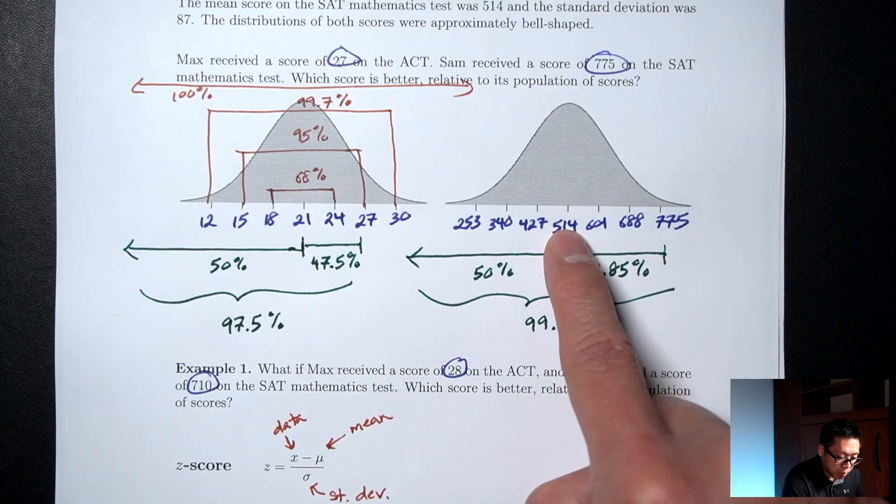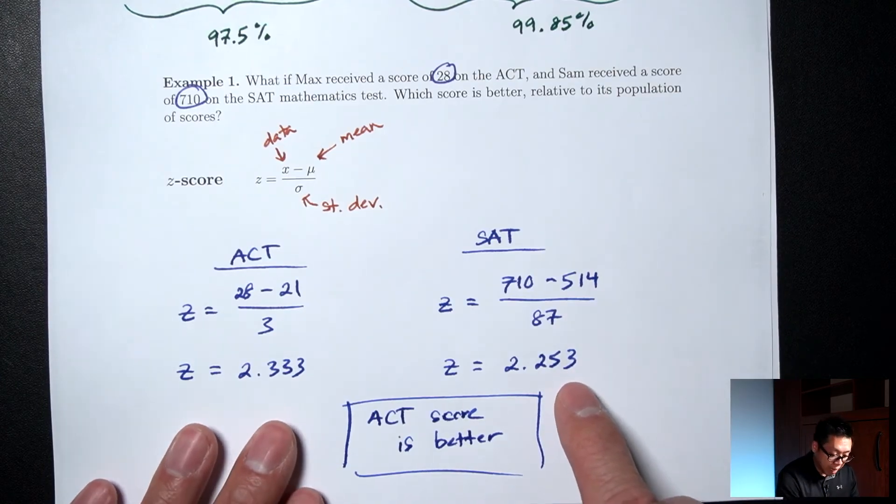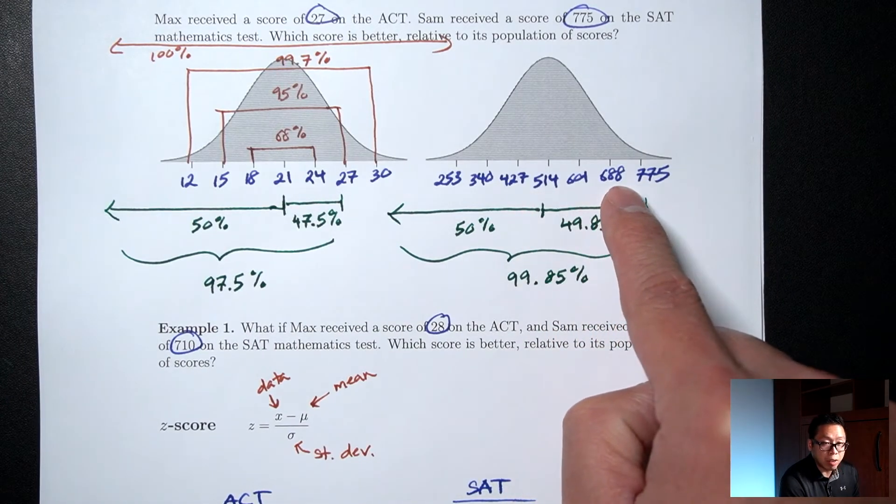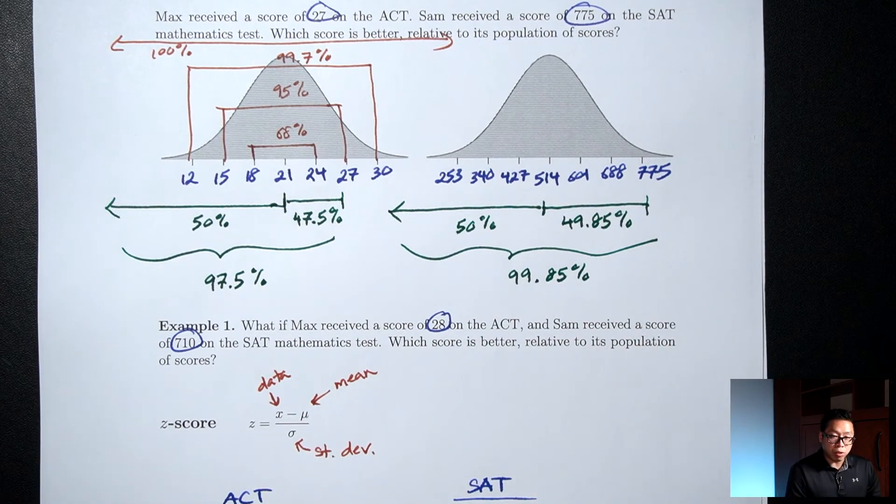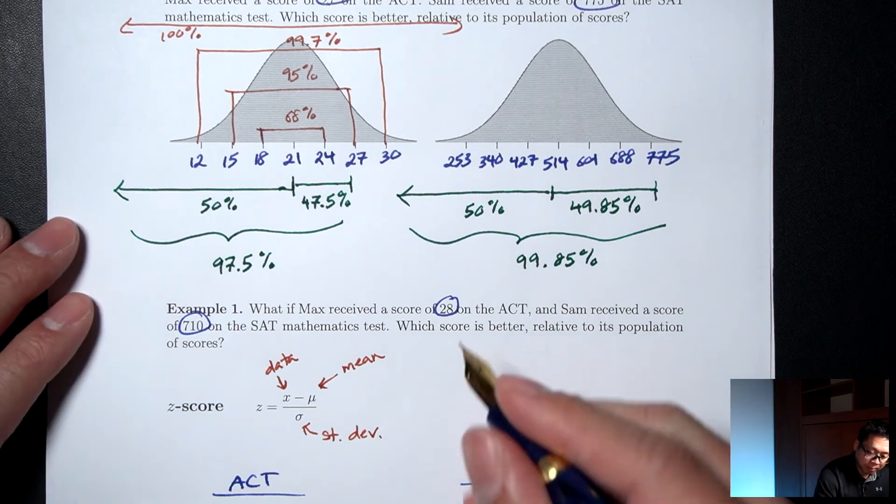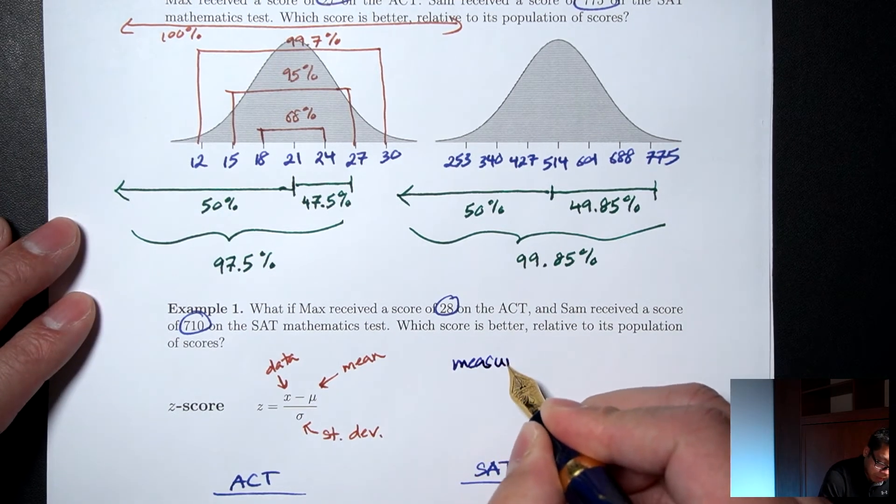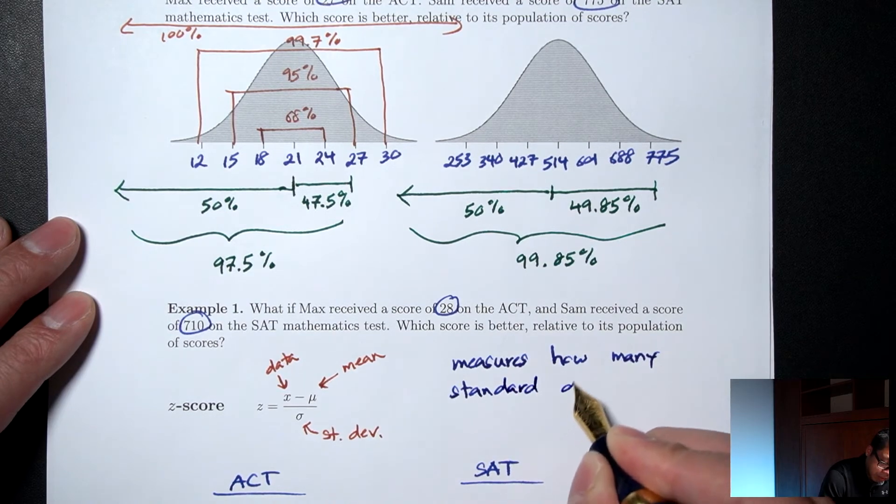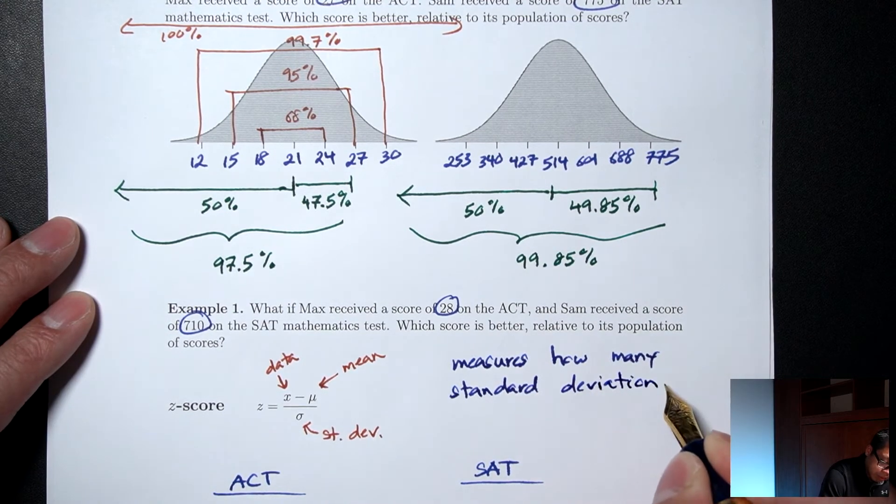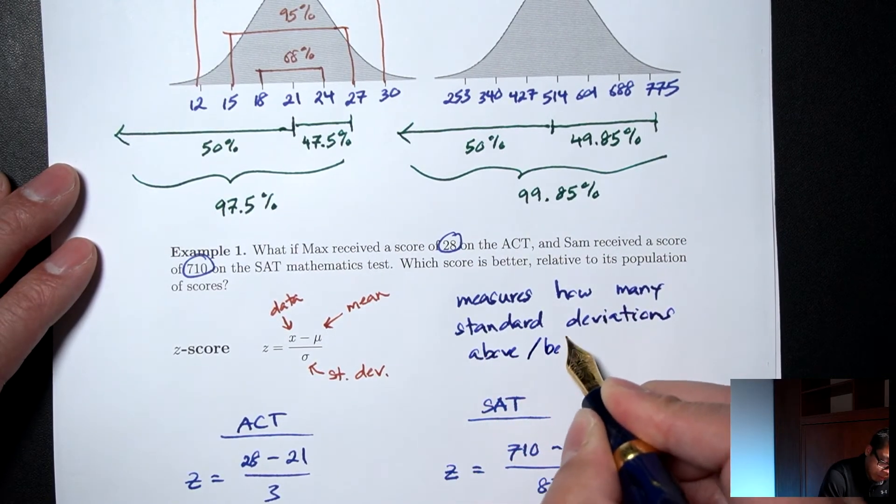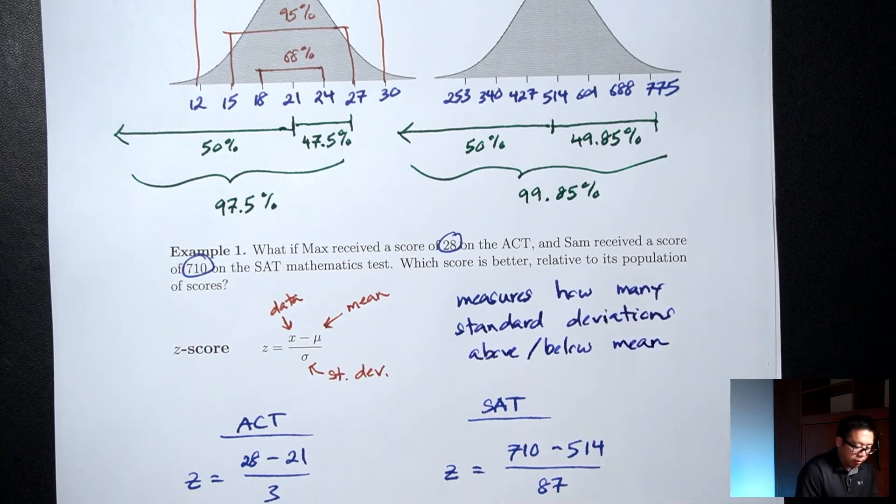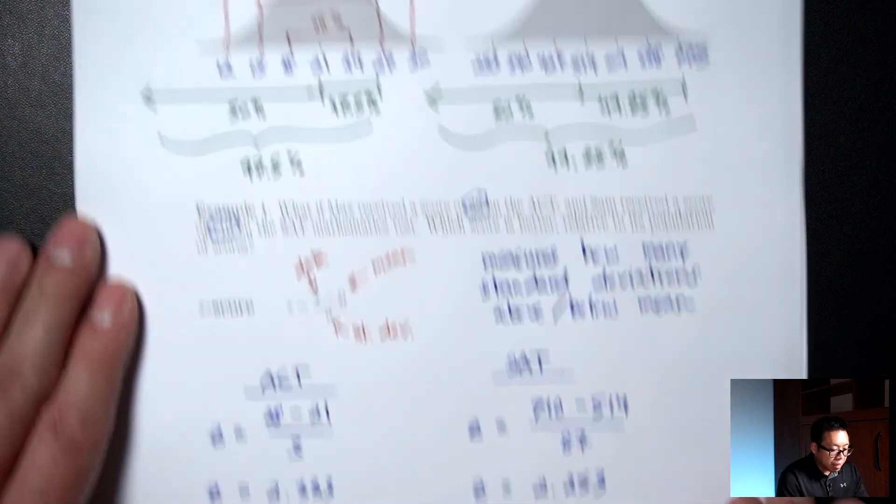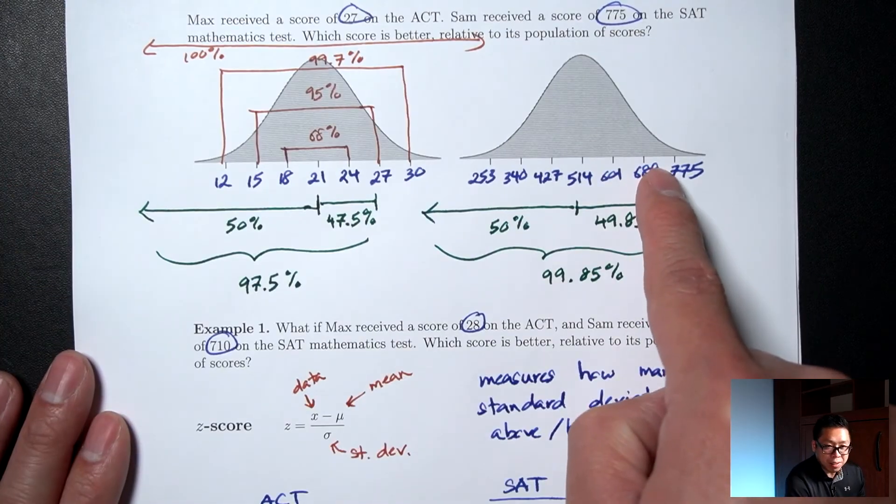The 710, we also said it was somewhere between 2 up and 3 up. And what we calculated here is that it's exactly 2.253 steps above, or 2.253 standard deviations above the mean. So the z-score measures how many steps or how many standard deviations above and below the mean. So we can say that a 28 on the ACT is better than a 710 on SAT because it's slightly more to the right than the 710 on the SAT picture.